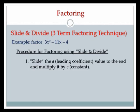We have the polynomial 3x squared minus 11x minus 4. Our first step is the slide. Slide the a, which is the leading coefficient — that number in front of the squared term — to the end and multiply it by c. c is the constant. There's a standard form: ax squared plus bx plus c. You'll see that creeping in especially when we get to quadratic equations later in the semester.